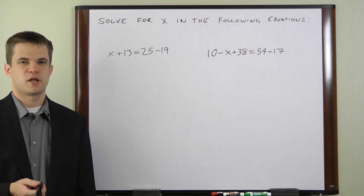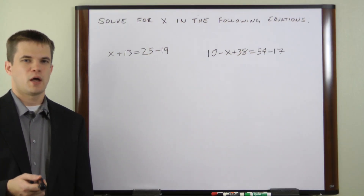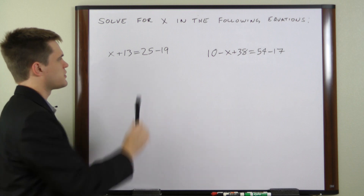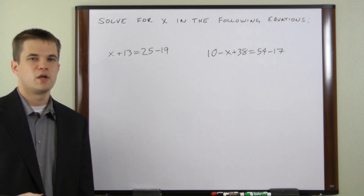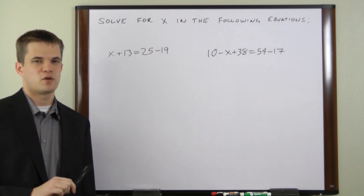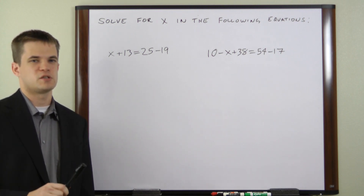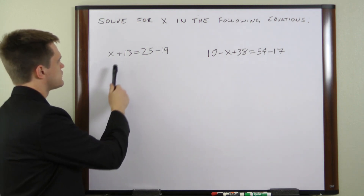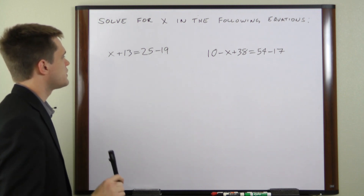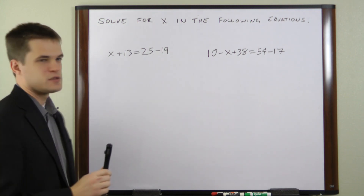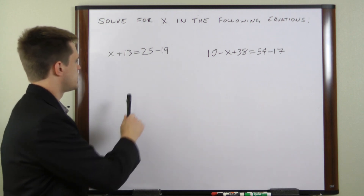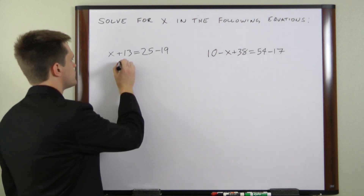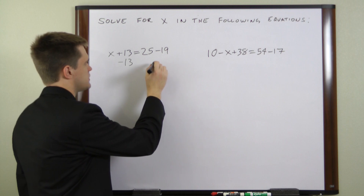One of the most basic concepts in algebra is the single variable equation. A single variable equation consists of a variable, usually x, and some other numbers. All you have to do to solve it is isolate x on one side of the equation by performing the same operations to both sides. In this first example, we have x plus 13 equals 25 minus 19. To isolate x, we need to subtract 13 from both sides of the equation.